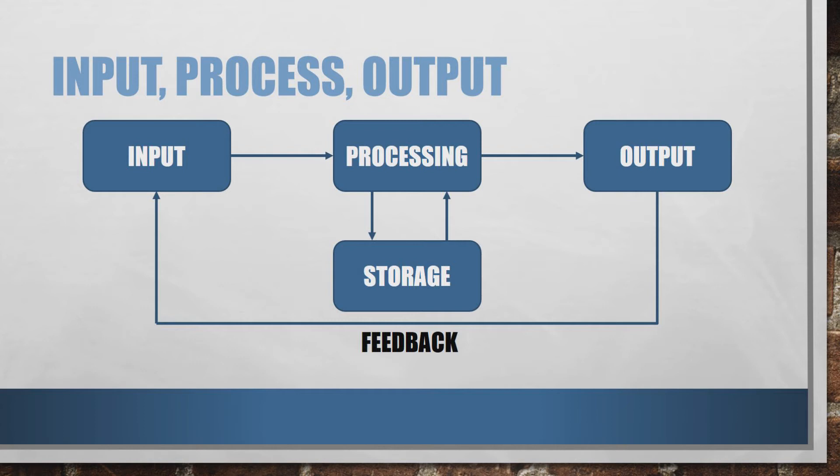So everything we're doing with algorithms and with computer programs is working on this model. We're taking user input, we're doing something with it, not necessarily straight away, it could go into storage first, but there's definitely some processing going on. And then our system is giving some kind of output. And that output might not make it all the way out of the system straight away. It might feed back in and become a new input again. But everything we're doing with algorithms is following this really simple to follow model.